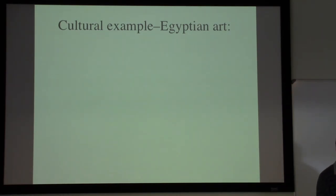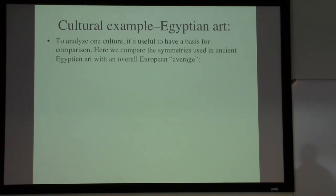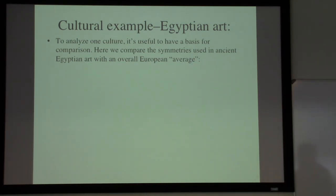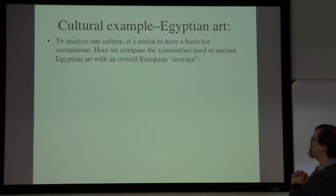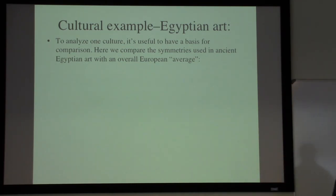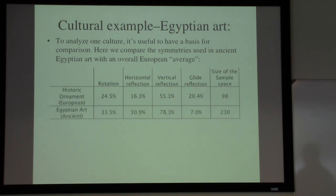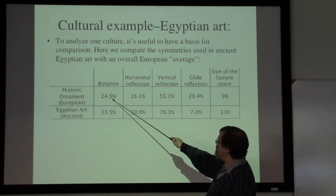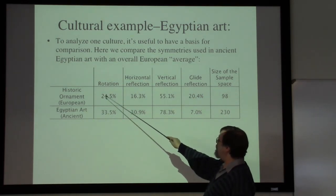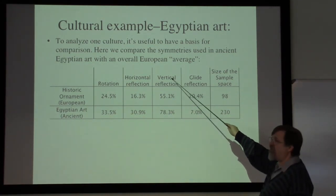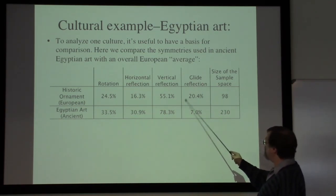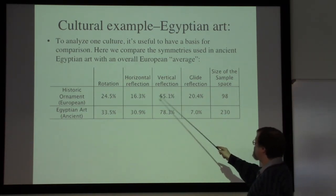Let's take a look at an example of how this works in a particular culture — Egyptian art. Surveying a European historic ornament book: just under a quarter of pieces had some kind of rotation, 16% had a horizontal reflection, 55% had a vertical reflection, and about 20% had glide reflections. These percentages add to more than 100% because many designs have multiple kinds of symmetry simultaneously.